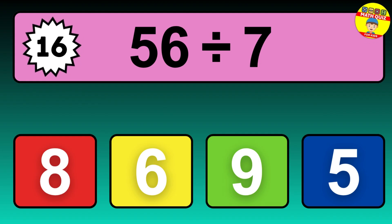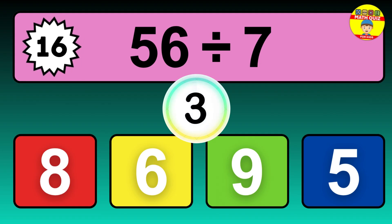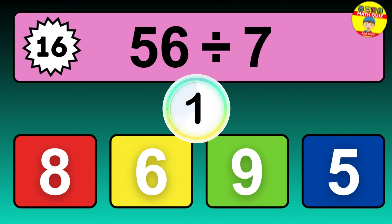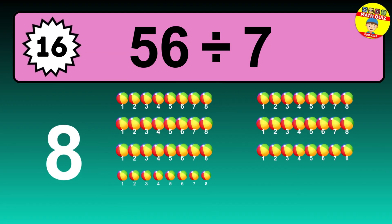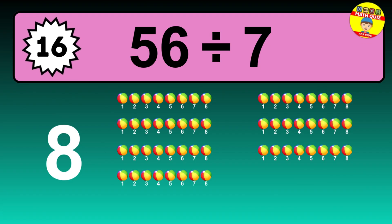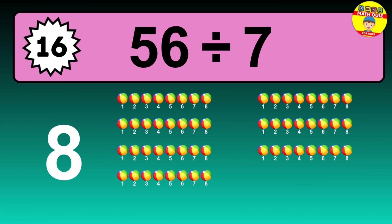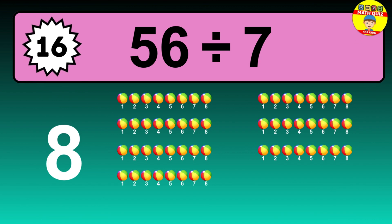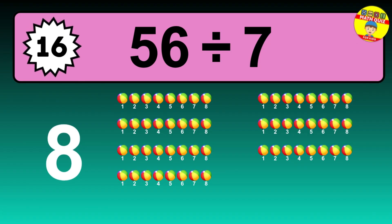56 divided by 7. It's time to think. Let's go to the solution. Divide the number 56 by 7. Each group contains 7 units, so dividing 56 by 7 results in 8 equal groups. Thus, the result is 56 divided by 7 equals 8.